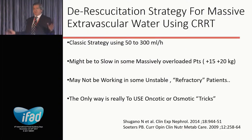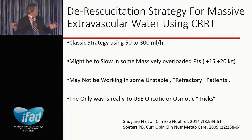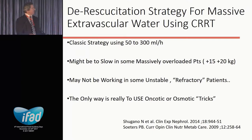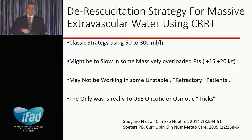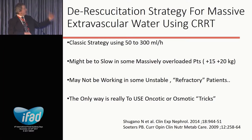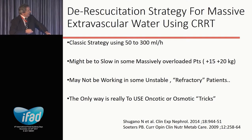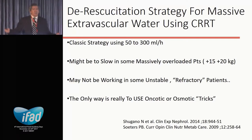The classical strategy would be to use CRT in severe patients and start at about 50 to 300 ml per hour. But many times if you do this you don't reach your goal of a really negative balance of minus one to minus two liters per day, so it may be too slow in severely fluid-overloaded patients. As I said at the beginning, you have patients who are very stable with no lactate, no noradrenaline, and you try to get fluid off...